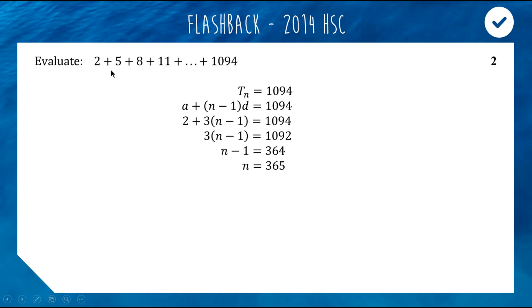So now we use our arithmetic sum formula. There are two on the formula sheet. When you know what the first and last term are, you can use this simpler one. There's a more complicated one when you don't have the last term.